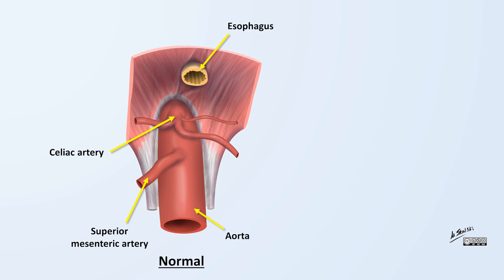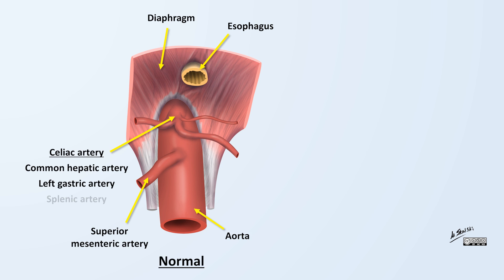To understand the hypothesized pathogenesis, it's necessary to review some anatomy. Here's a view of a normal celiac artery showing where it branches off from the aorta. This view is looking from the front of the patient, anterior to posterior, and slightly upwards from underneath the diaphragm. The celiac artery is extremely short, branching almost immediately into the common hepatic artery, left gastric artery, and splenic artery. The median arcuate ligament is a fibrous band of tissue attached to the diaphragm which wraps around the aorta, normally superior to the celiac artery.